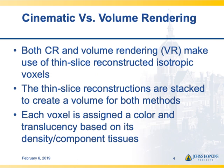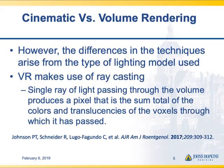What's the difference between cinematic rendering and volume rendering? Both make use of thin-slice reconstructed isotropic voxels. With those thin slices you create a volume, and then you assign each voxel a color and translucency based on its density and component tissues. However, volume rendering uses ray casting, where the pixel you see is just a sum total of a single ray of light shined through all the component voxels that make up that pixel.